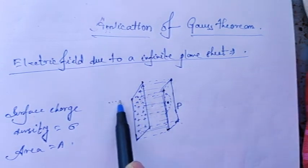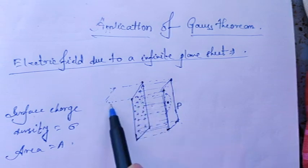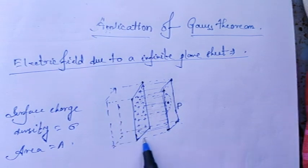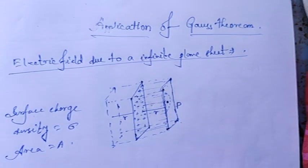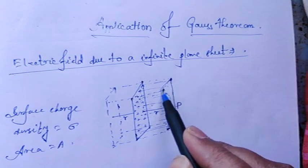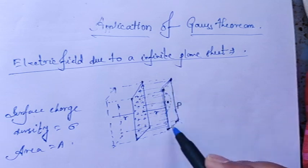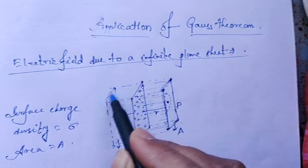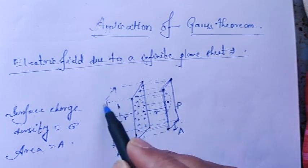Even if we consider only one side as a Gaussian surface, it's not right because it's a plane sheet. As it is a plane sheet, both sides contain the charge — positive charge. So on the opposite side there will also be a field, meaning field lines pass through both sides. So the opposite side also needs to be included in the Gaussian surface, at equal distance — if it is R on one side, this distance also will be R. We will consider only the two face areas A (front and back), because the side faces do not satisfy the Gaussian surface conditions.